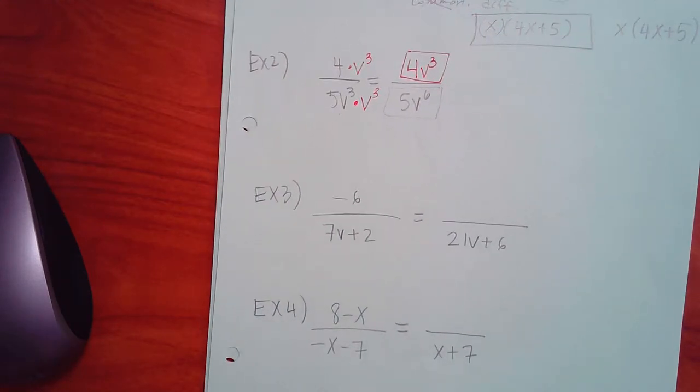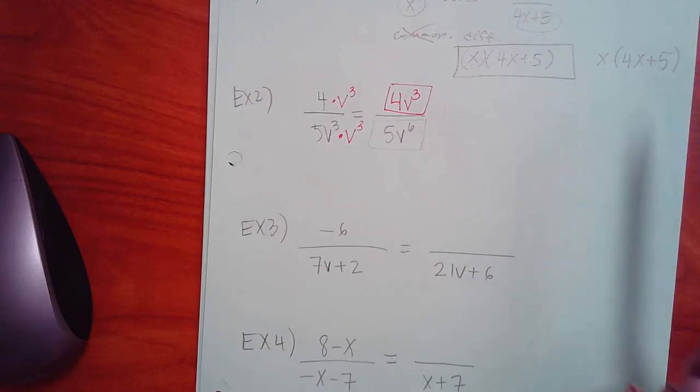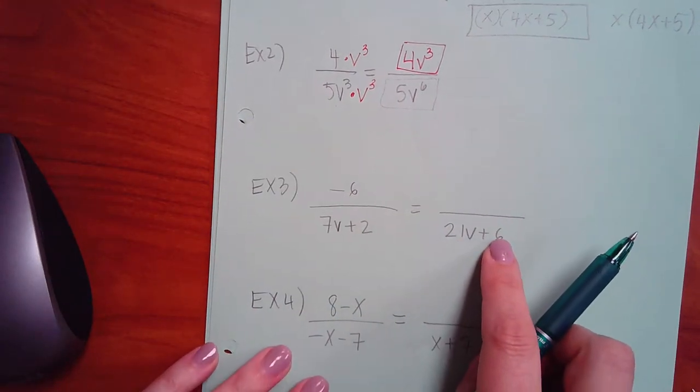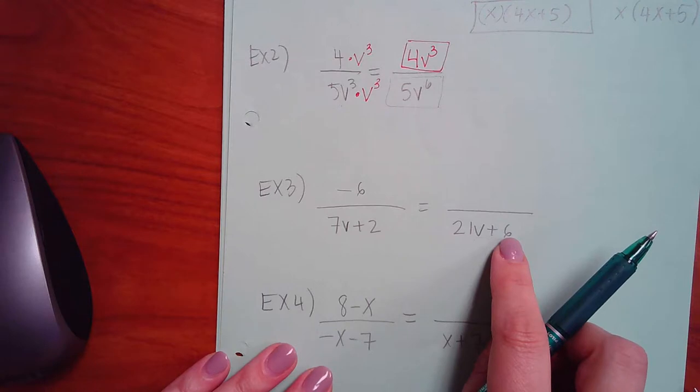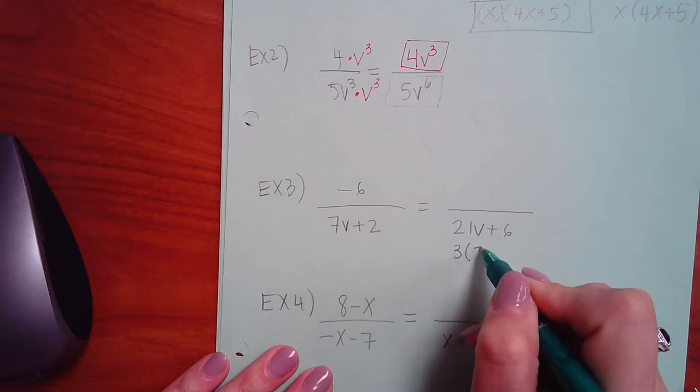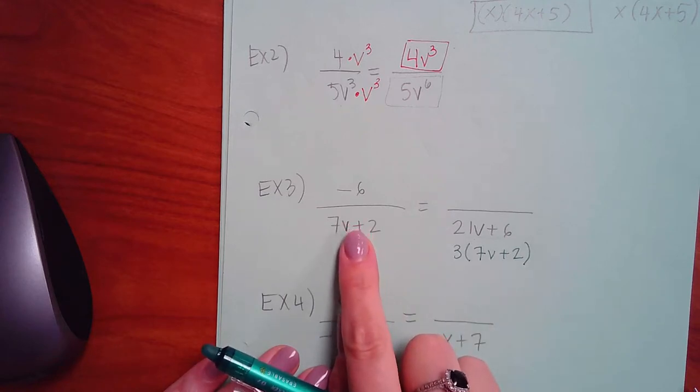So example 7, same thing. They figured out that this is the common denominator, and so they want you to figure out how you're going to get that common denominator. This is not in its factored form. Normally, when we get common denominators, they're in their factored form. This one's not. So I'm just temporarily going to put it in its factored form. What does 21v and 6 have in common?